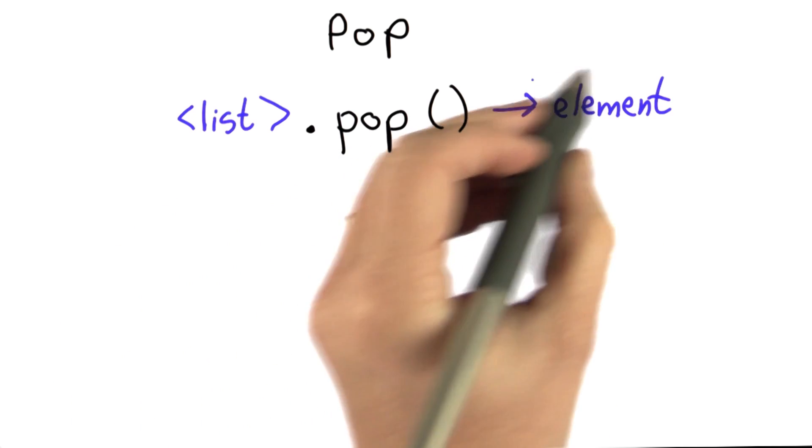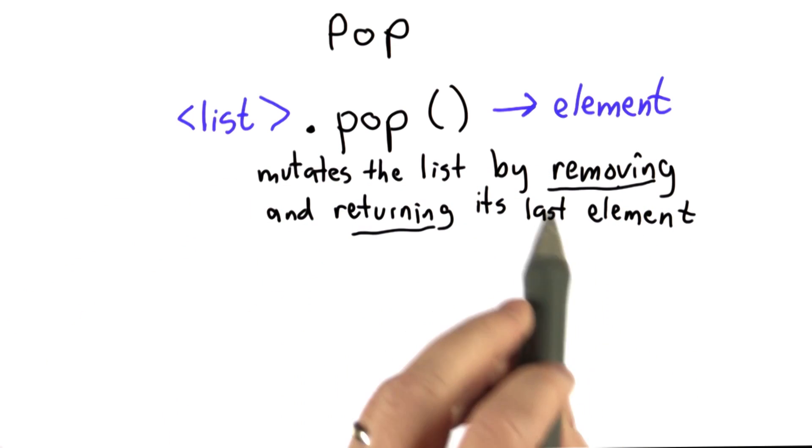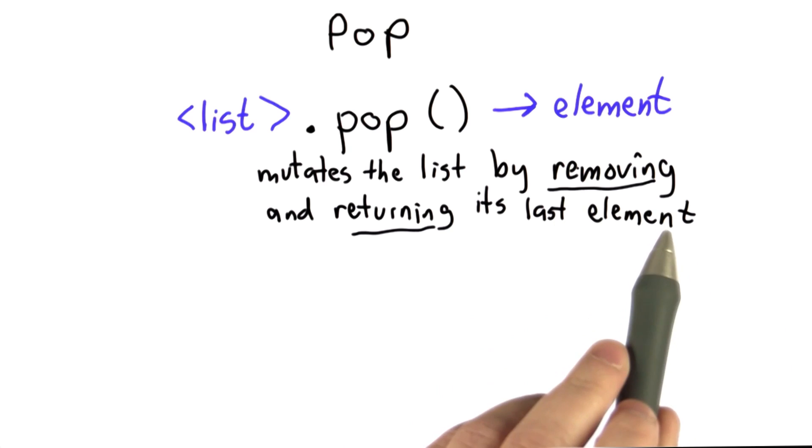And what it outputs is an element of the list. What pop does is it mutates the list. It removes the final element of the list and also returns the value of that element.